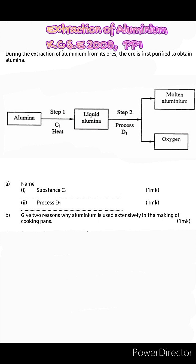Now this is a question from KCSE 2008, paper 1. The question goes as such: During the extraction of aluminum from its ores, the ore is first purified to obtain alumina. So we have a flowchart over there and we're supposed to answer the questions that follow using it.